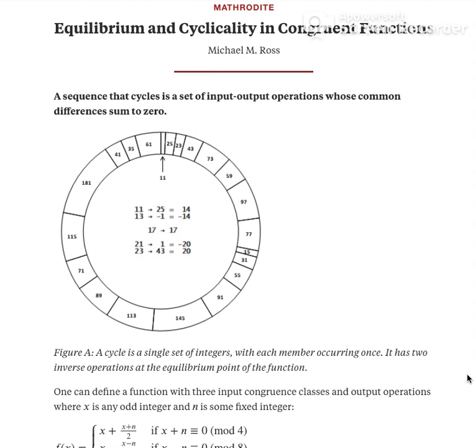We have two sets of inverse operations, 14 and -14, and -20 and 20, which are very significant in that they make the complete cycle possible. Let me further define a cycle as a single set of integers with each member occurring once.